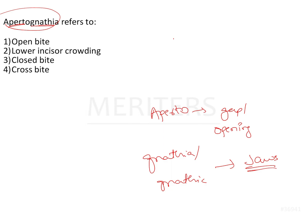This indicates a skeletal type of open bite. From our options — open bite, lower incisor crowding, close bite, or cross bite — the most correct answer would be open bite. But had there been an option between a dental open bite or a skeletal open bite, the more correct answer would have been a skeletal open bite.